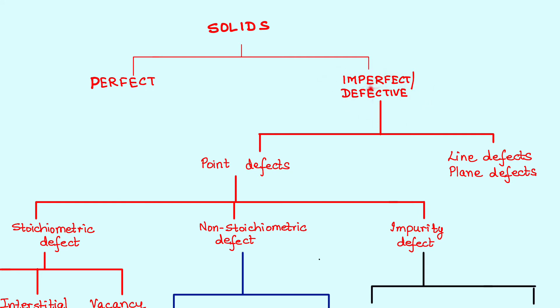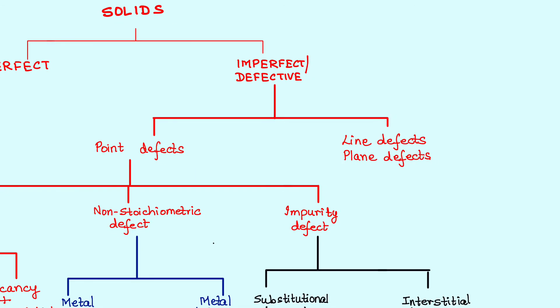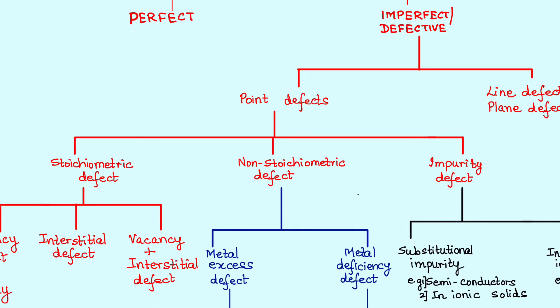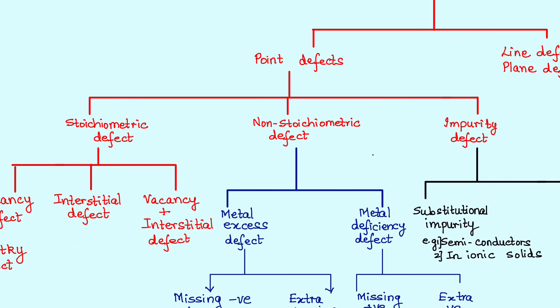So we have already classified solids into two categories: perfect and imperfect or defective. Now further, the kind of imperfections or defects in solids can be classified into two categories. We have the point defects or the line defects and plane defects. Now why have I clubbed the line and the plane defects in one column is because we are not really going to study those at the present level of our study. Maybe when you go for your material science engineering you would want to study more about them. Presently we are more focused on the point defects.